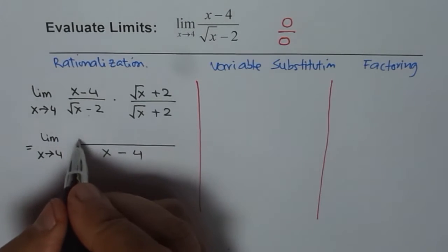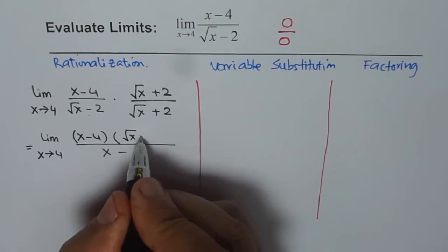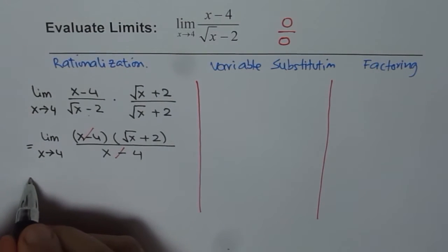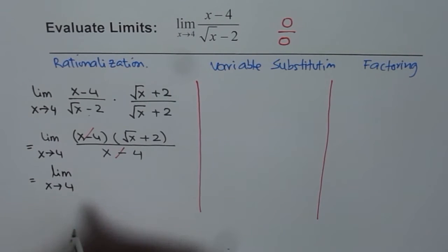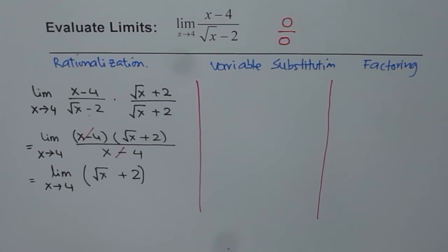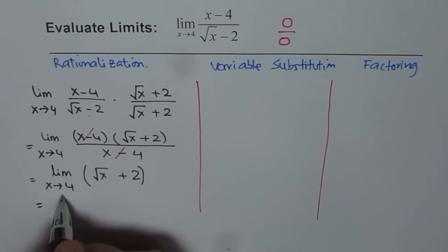In the numerator we already have x minus 4 as one of the factors, and the second one is square root of x plus 2. Now as you can see we can cancel the common factors from numerator and denominator, thereby simplifying the expression. And now it is square root of x plus 2. Now applying the laws of the limits, this is sum of two limits, so we can just substitute x as 4 and calculate the answer.